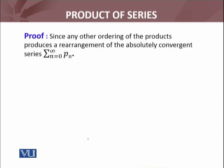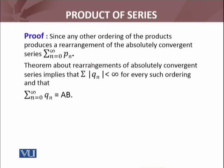Since any other ordering of the product of the series produces a rearrangement of the series we have shown to be absolutely convergent, and since rearrangements of an absolutely convergent series are also convergent — a result we discussed earlier — any other ordering of the product also produces a convergent series. So if q_n is any other rearrangement of the product series, then summation q_n is also convergent.